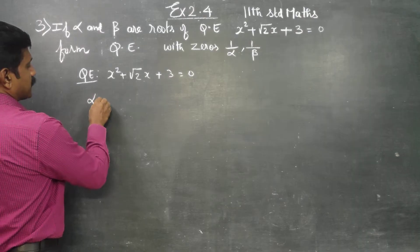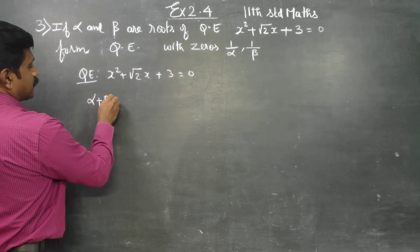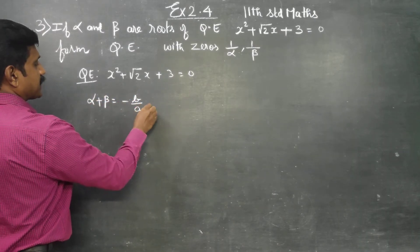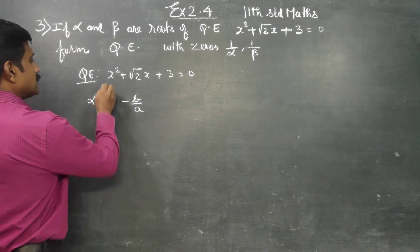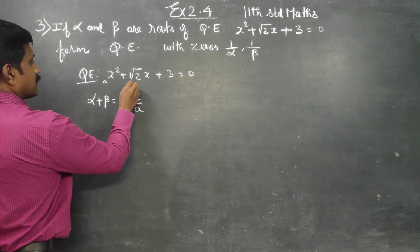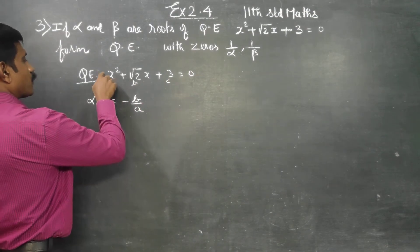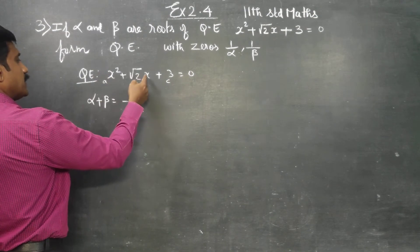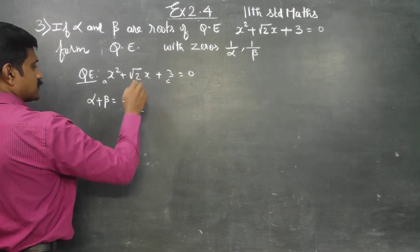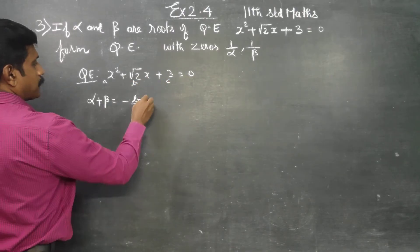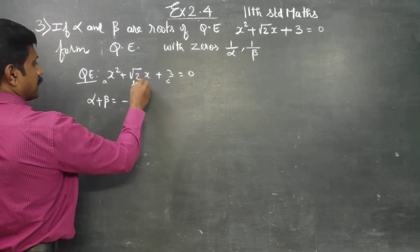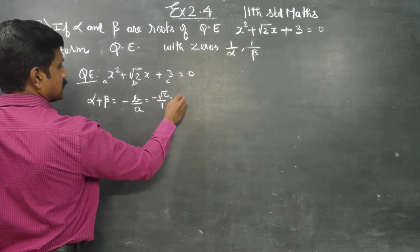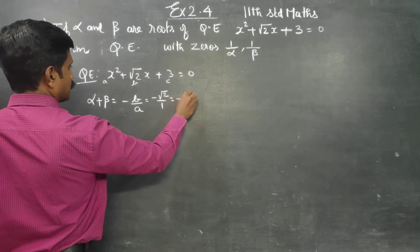Then, alpha plus beta — sum of the roots formula — is minus b by a. From the standard formula, this is my a, this is my b, this is my c: the coefficient of x squared is a, the coefficient of x is b, and the constant is c. So alpha plus beta equals minus root 2 by 1, which gives minus root 2.